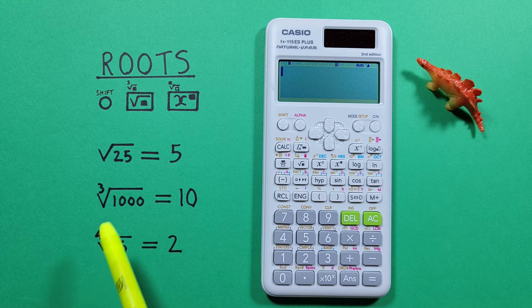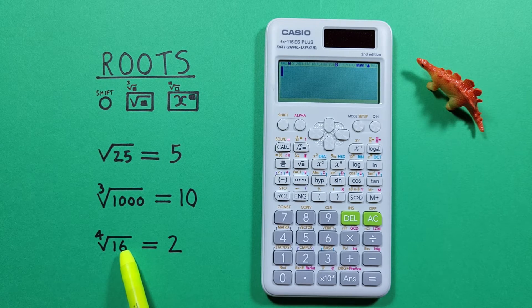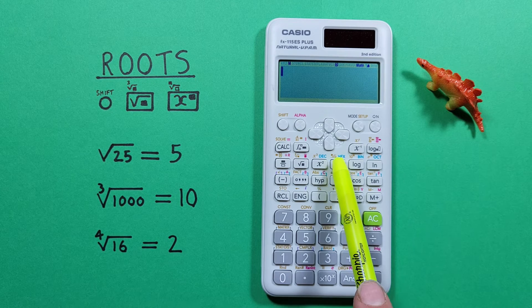What if we want a root that isn't a square or cube root, like the fourth root of 16? To do that, we use the nth root function.